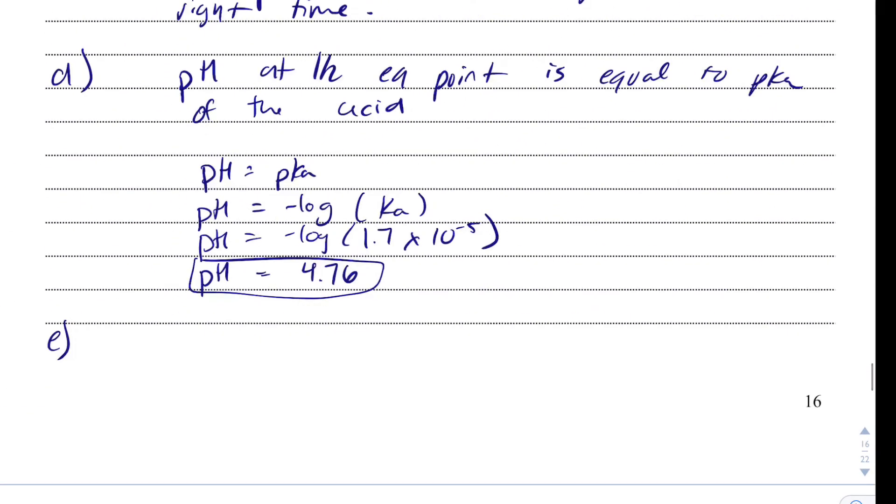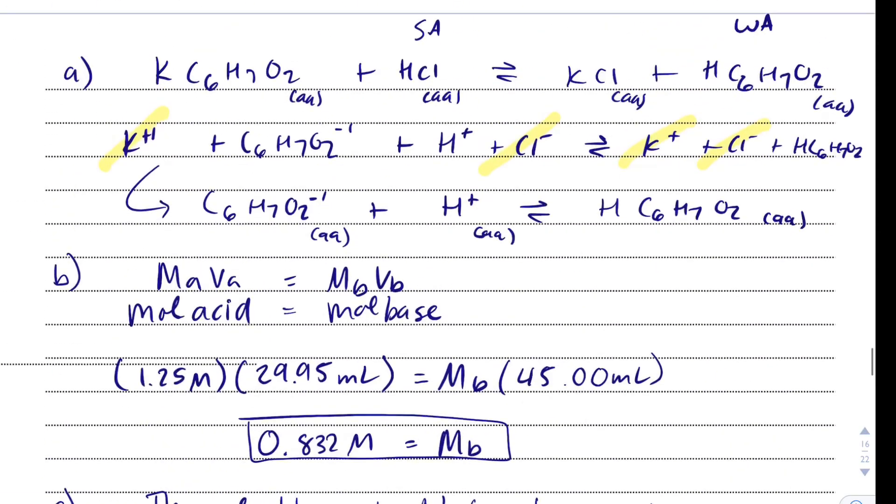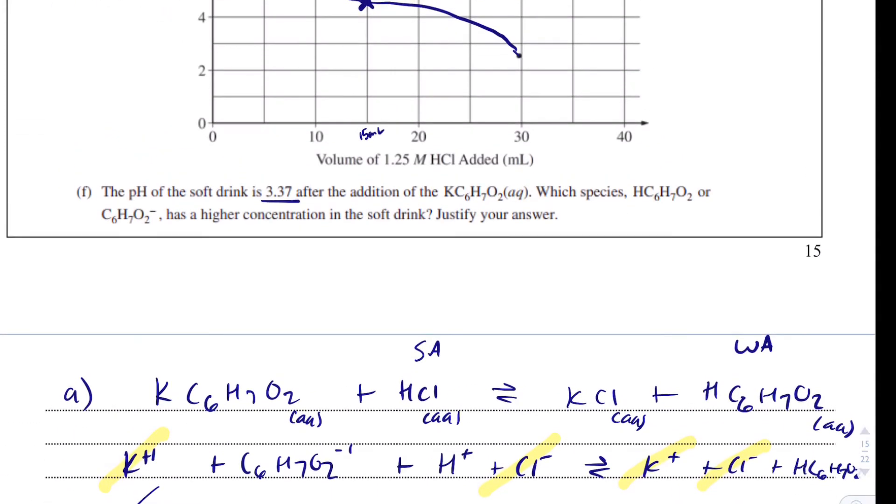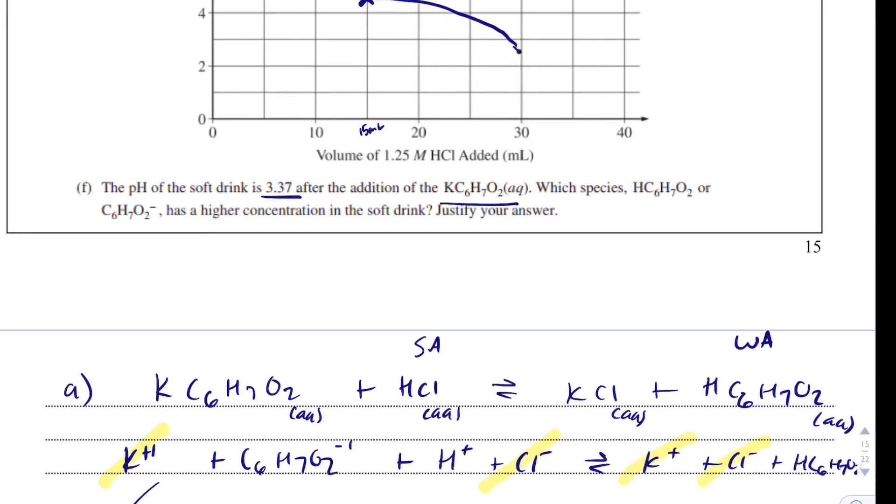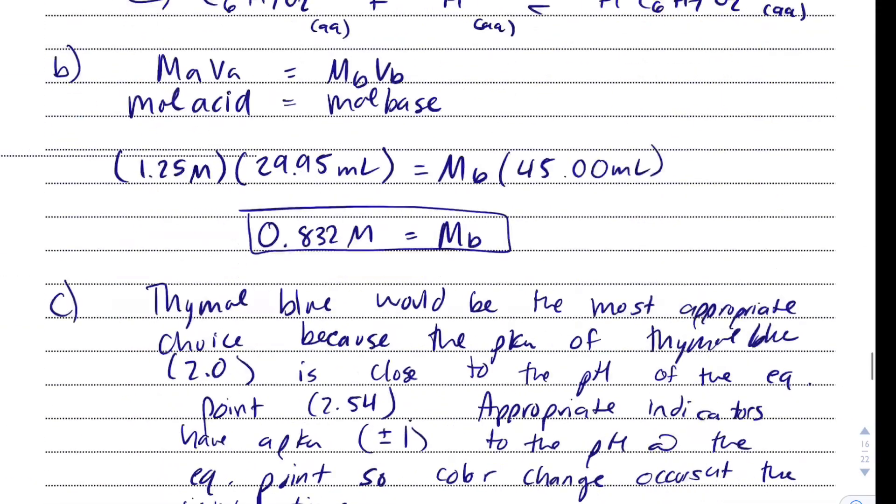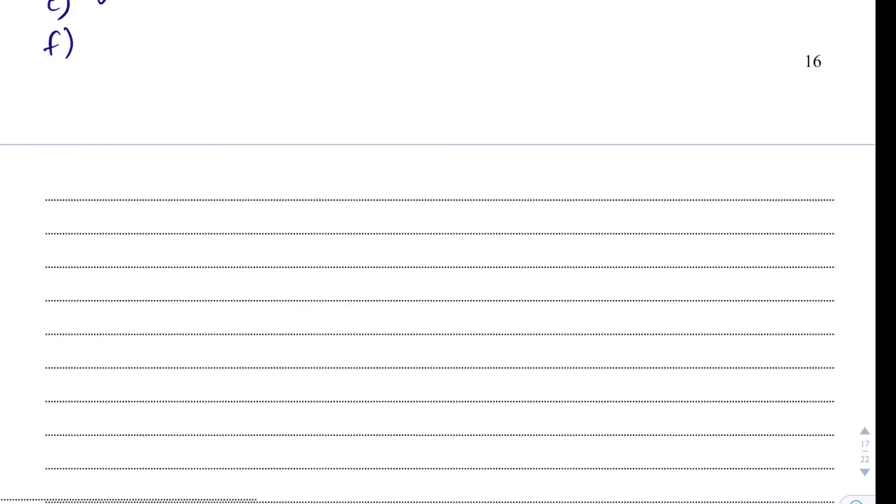So now last part is going to be part F. Let's see what that is asking. The pH of the soft drink is 3.37 after the addition of potassium sorbate. Which species, HC6H7O2 or C6H7O2 minus, has a higher concentration? And we need to justify our answer. So hopefully you recognize this as a common ion question, and common ions are just a buffer question. So hopefully you're thinking, let's use the Henderson-Hasselbalch equation. So pH equals pKa plus the log of A minus over HA.